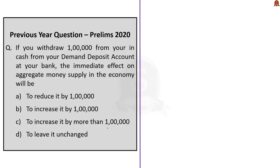Second question: If you withdraw 1 lakh rupees in cash from your demand deposit account at your bank, the immediate effect on aggregate money supply in the economy will be — A: to reduce it by 1 lakh, B: to increase it by 1 lakh, C: to increase it by more than 1 lakh, D: to leave it unchanged.